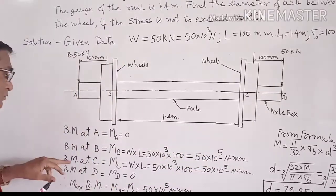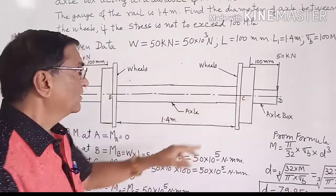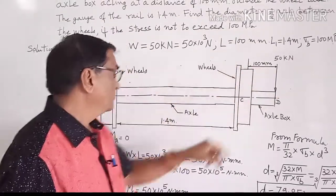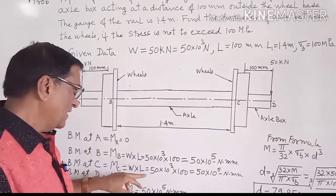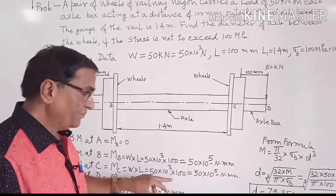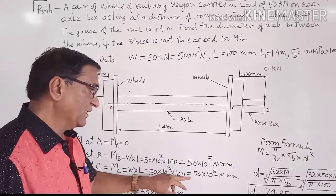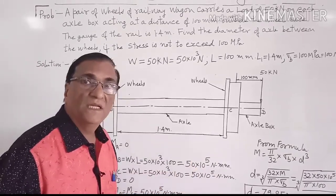Now the bending moment at point C. At this point, the load into distance, that is equal to 50 into 10 raise to 3 multiplied by 100, that comes out to be 50 into 10 raise to 5 N millimeter.